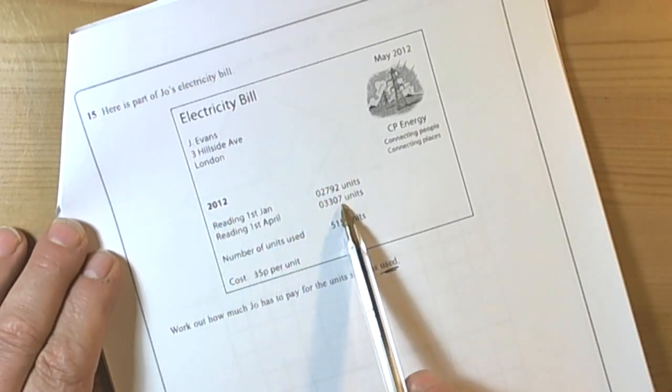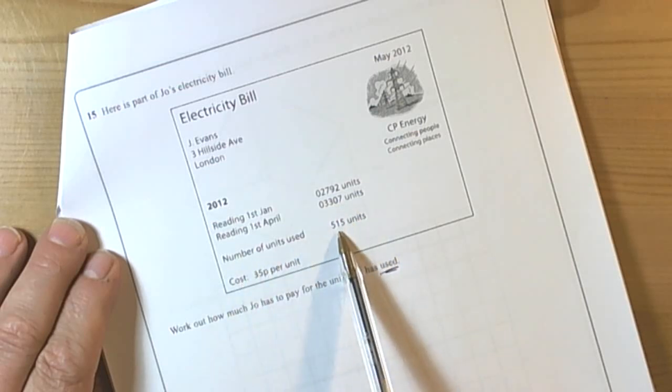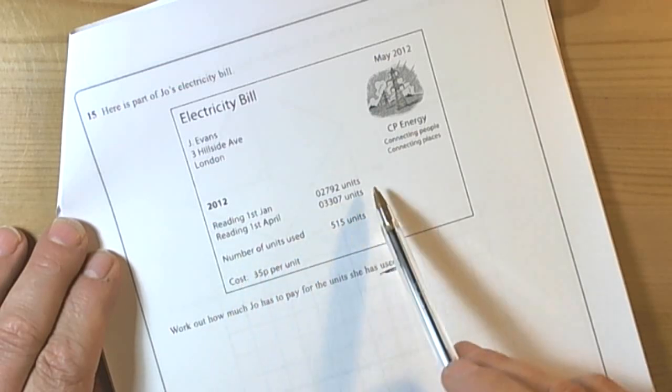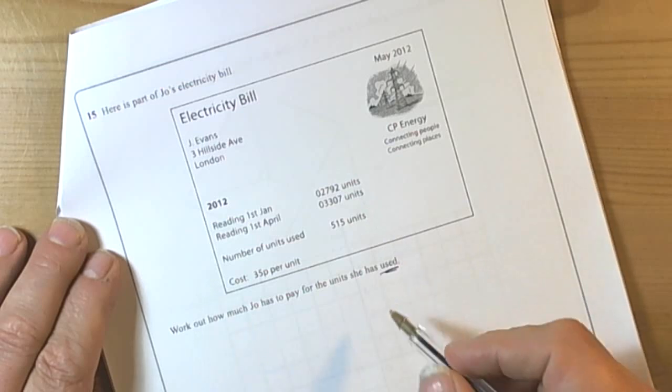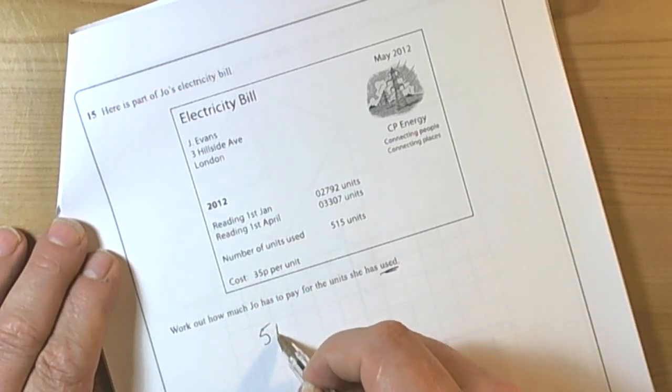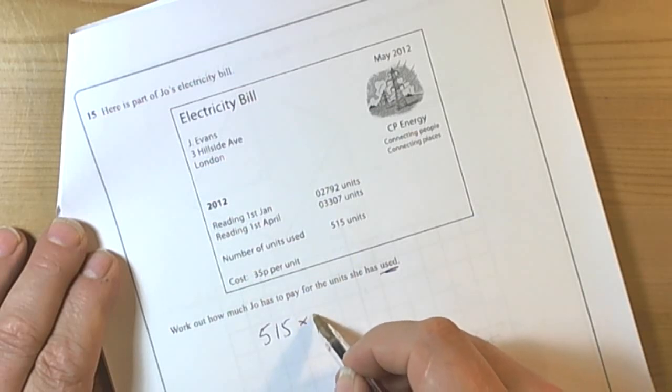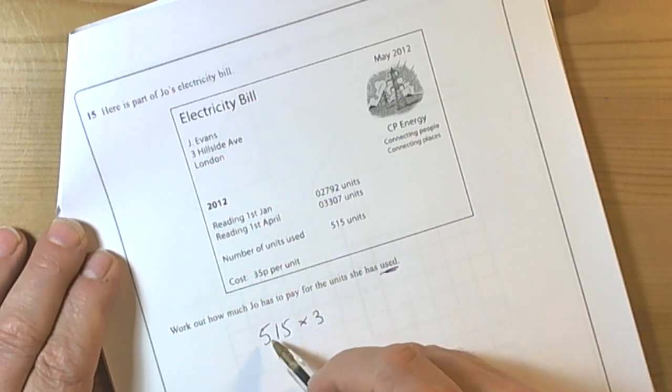The reading on the 1st of April, the number of units used is 515. She has used 515 units and it's costing us 35p for every one of those units, so we are going to have to do 515 times 35.